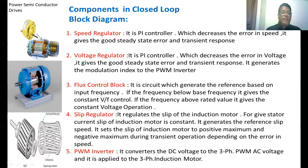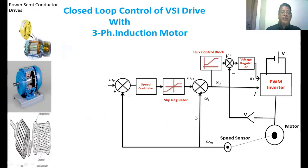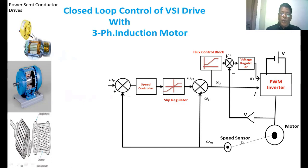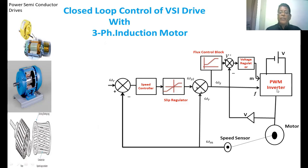Now we are going to see the closed-loop block diagram of a three-phase induction motor. This is the closed-loop control of a VSI drive. The three-phase induction motor consists of a speed sensor. The rotor and stator of the induction motor are shown. This is the PWM inverter — its output is given to the motor. This is the input DC voltage, the reference speed, the speed controller, the slip regulator, the flux control block, and the voltage regulator. The closed-loop control consists of an outer speed loop and an inner slip speed loop, because the slip of the induction motor highly depends on the current taken by the induction motor, so indirectly we are controlling that current.